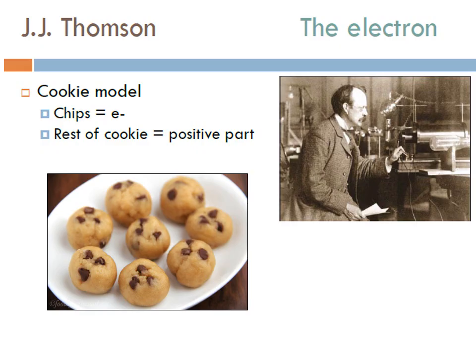Now that you've seen how JJ Thomson used the cathode ray tube to discover the electron, he came up with the cookie model — also called the plum pudding model — but we'll call it the chocolate chip cookie model. The chocolate chips are the negative electrons and the rest of the cookie is the positive part, since he couldn't figure out what the positive part was. In your timeline, draw the cookie model, label the chocolate chips as negative electrons and the rest of the cookie as the positive part.